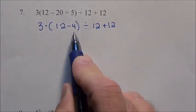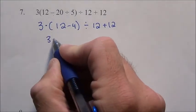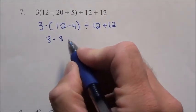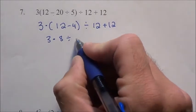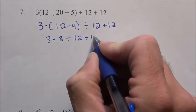Now we're going to finish out those parentheses. So 3 times 8 divided by 12 plus 12.